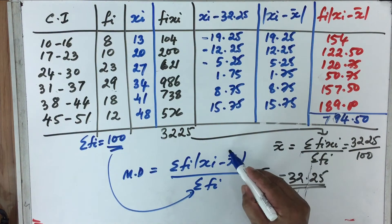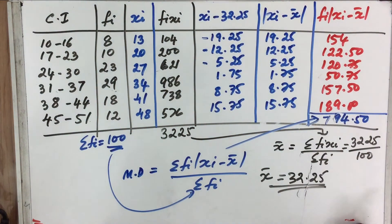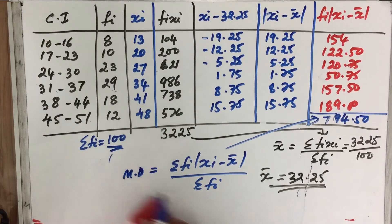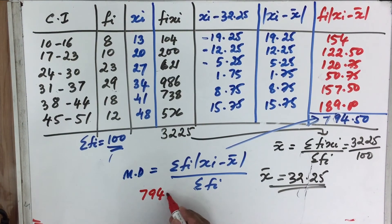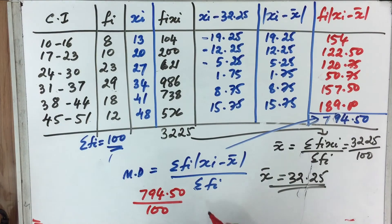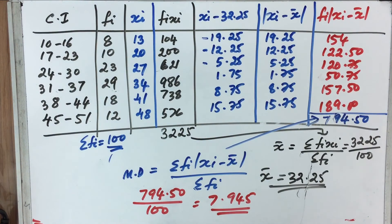Now we substitute the values into the formula: mean deviation equals 794.50 divided by 100, which equals 7.945. This is going to be the mean deviation. It is very easy to find it this way.